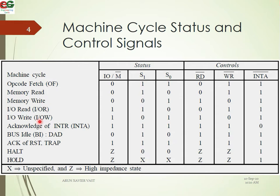The status is represented by three pins. These are IO/M bar. IO stands for Input/Output, and M stands for Memory — that is how we write it. The input devices use write and read. IO/M bar — that is how we write it.